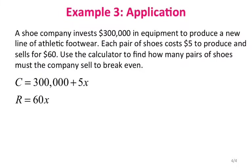For the application problem: a shoe company invests $300,000 in equipment to produce a new line of athletic footwear. Each pair costs $5 to produce and sells for $60. We need to find how many pairs of shoes must the company sell to break even. The cost function is C equals 300,000 plus 5x, and the revenue function is 60x. To find the break-even point, I want to find the intersection of these two functions.